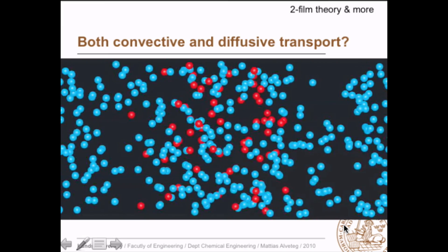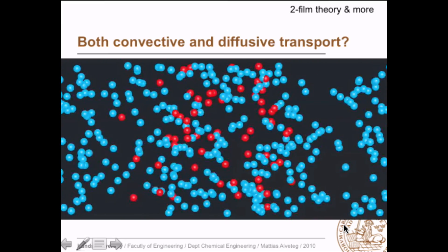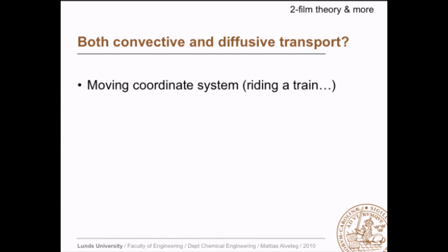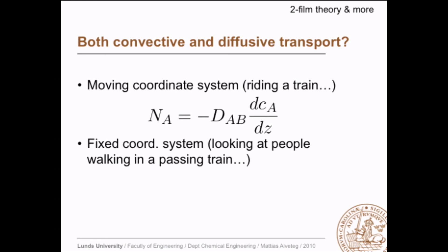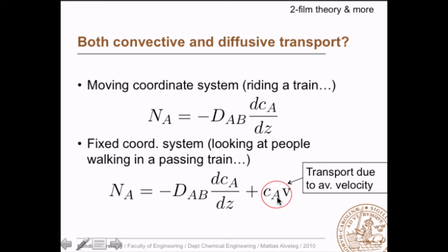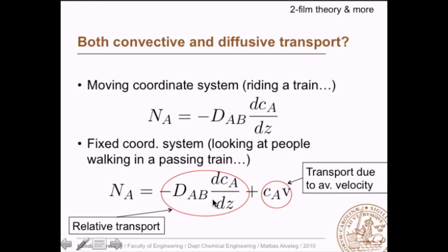What we're doing is a bit like riding a train — we let the coordinate system follow the average velocity. In this moving coordinate system, the only movement is relative motion, so we only have diffusion left. But if we want to stand next to the pipe and look at the flow with a fixed coordinate system, we need to add a convection term: the transport due to the average velocity of all molecules, plus the transport relative to that average velocity.